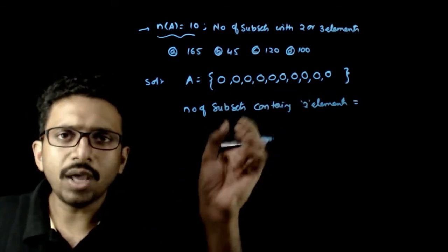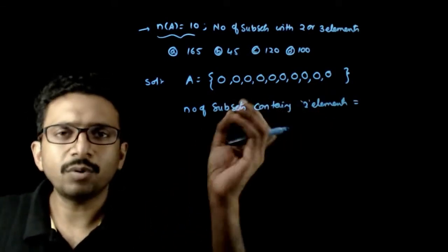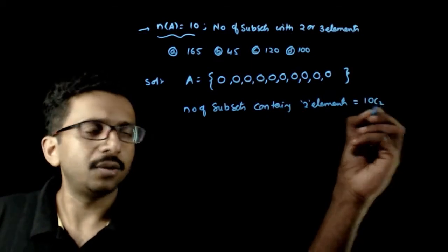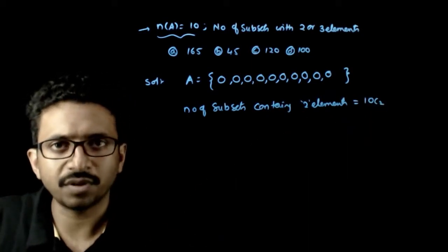simply I need 2 element subsets, so from these 10 elements I can select any 2 elements. This is 10C2. How many ways can I select 2 elements out of 10 elements?